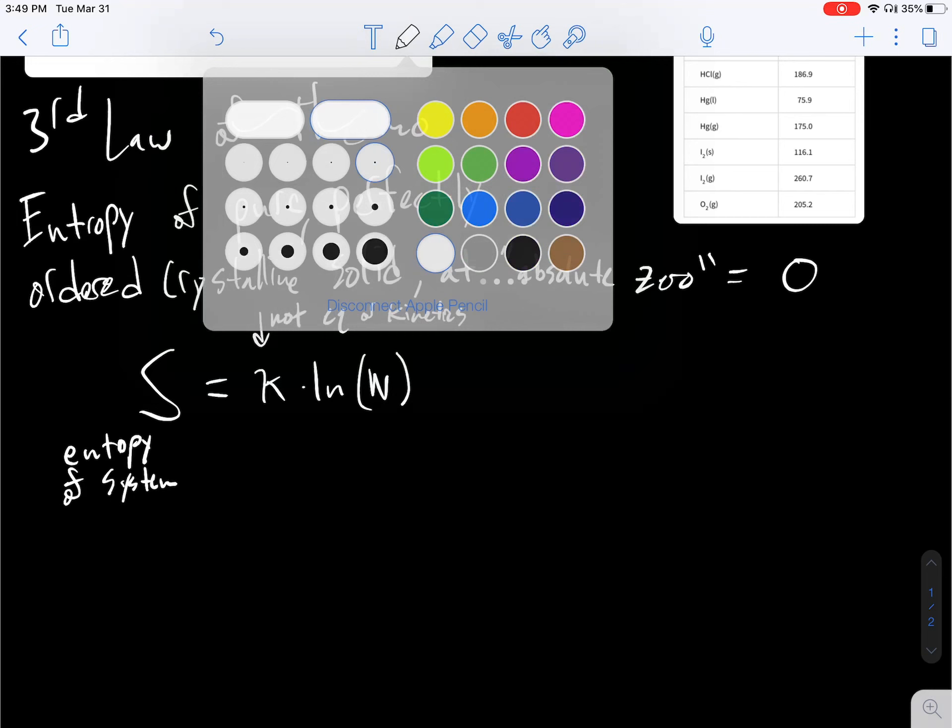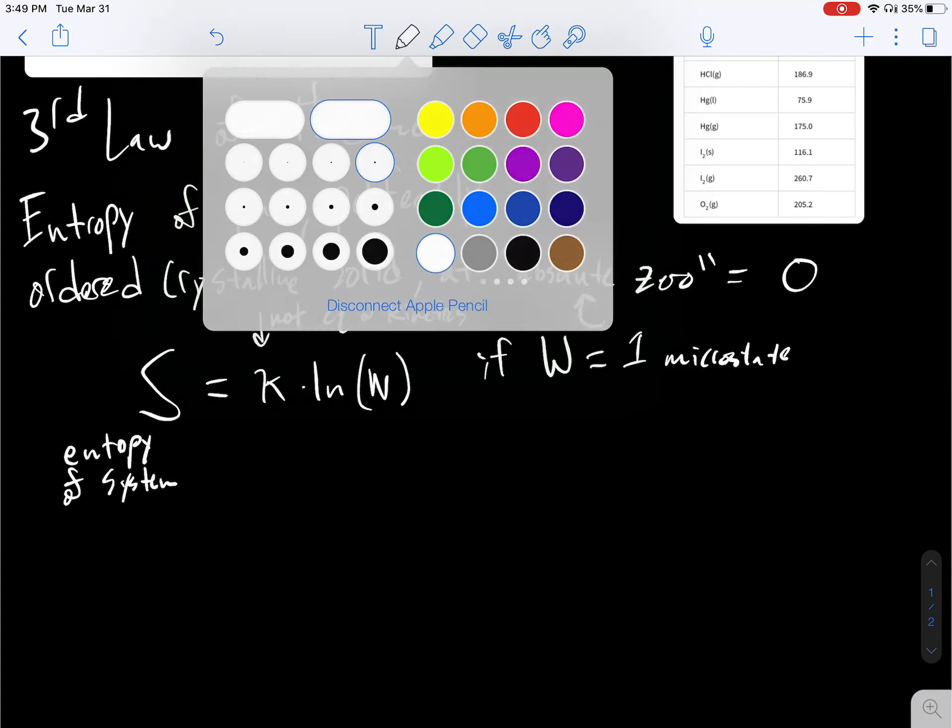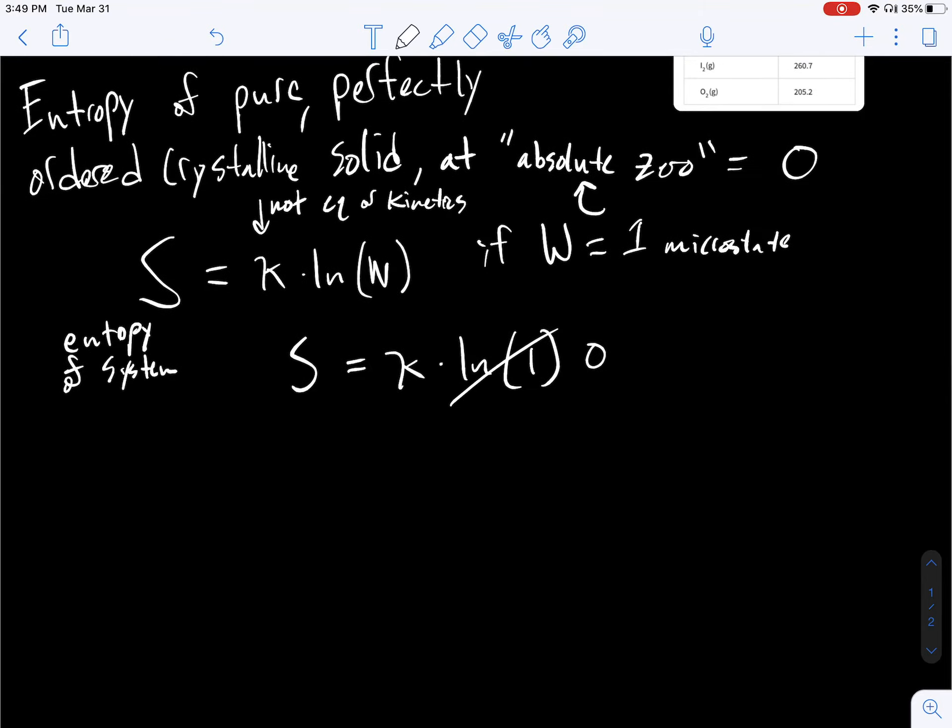Now, if W equals one microstate, that's when we're at this absolute zero level. There are not multiple equivalent microstates or rearrangements for these atoms to be. So entropy equals Boltzmann's constant times the natural log of one. That is zero. So entropy equals K times zero, so it's zero.